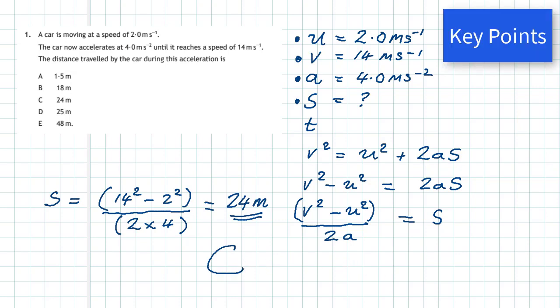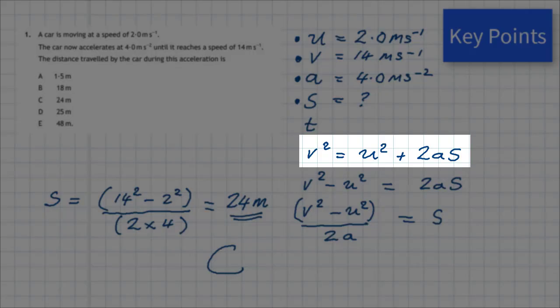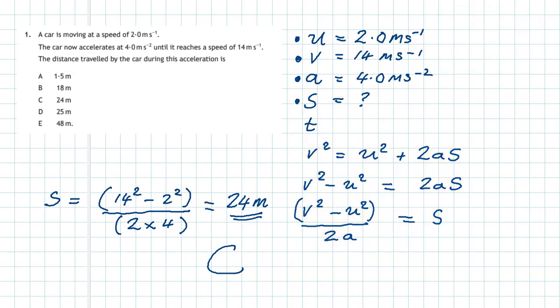The key points of this question: first, you must know your kinematic list — u, v, a, s, and t. You must fill in the correct data, so read the question up to three times. Put a dot against all the things you have and what you need to find. Choose the correct equation, then practice rearranging v² = u² + 2as. Finally, plug in your numbers using brackets on your calculator, and get the answer 24 meters to two significant figures. The answer is C.